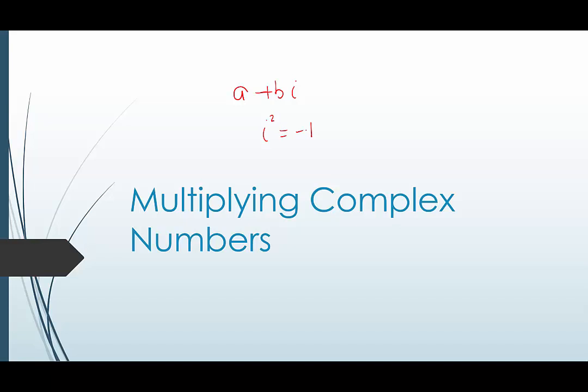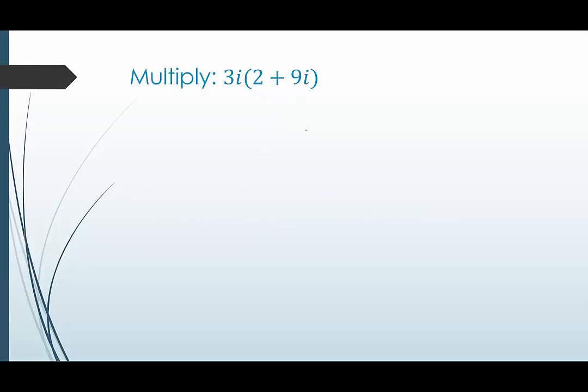When we multiply complex numbers, we want to make sure that our answer is also a complex number. So it should just be two terms, the real part and the imaginary part.